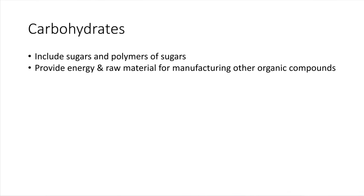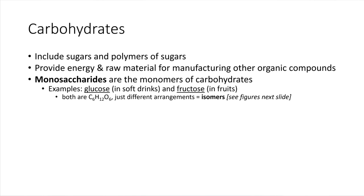There are three different categories of carbohydrates. We'll start with the simplest: the smallest sugars, which are called monosaccharides. Notice the prefix 'mono' — that means one — referring to one single sugar molecule. A good example is glucose, which sweetens a lot of soft drinks. Another good example of a monosaccharide is fructose, the type of sugar present naturally in fruits.